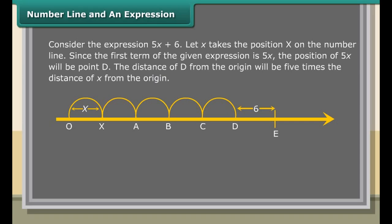Consider the expression 5X plus 6. Let X take the position X on the number line. Since the first term is 5X, the position of 5X will be point D. The distance of D from the origin will be five times the distance of X from the origin. Therefore, the position of E, or 5X plus 6, will be six units to the right of D.